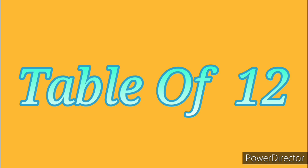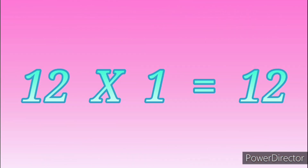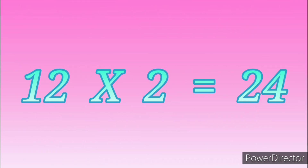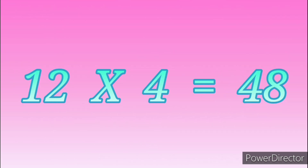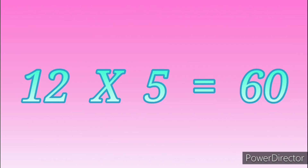Table of Twelve. 12 ones are 12. 12 twos are 24. 12 threes are 36. 12 fours are 48. 12 fives are 60.